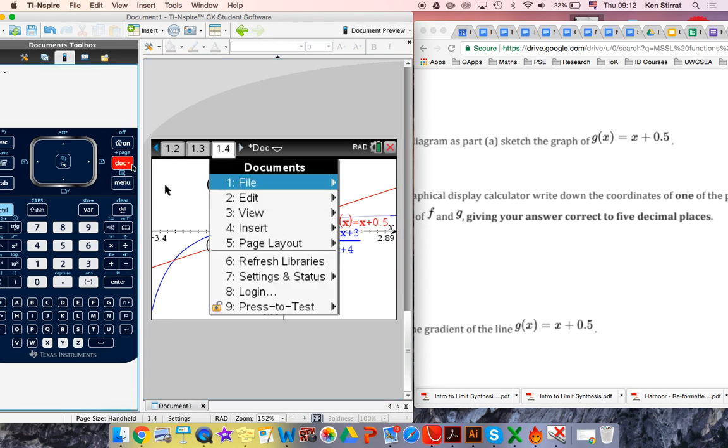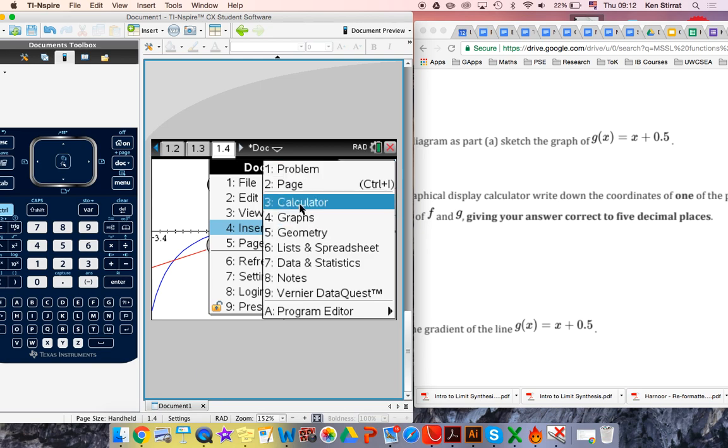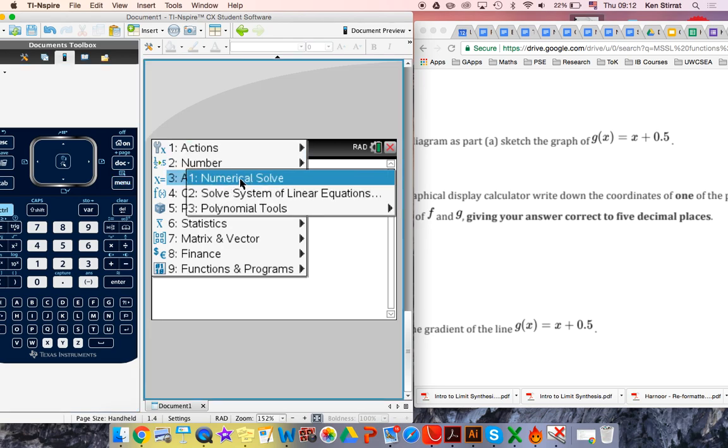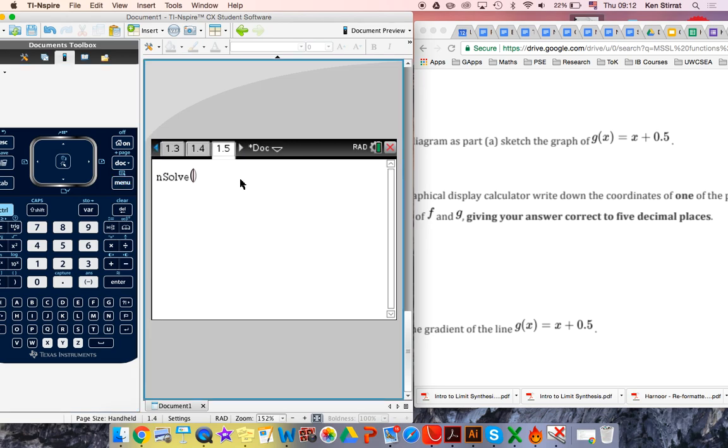So we can go document, insert, calculator page, and we can use our wonderful menu, algebra, numerical solve. So we want to solve, ooh, this might work. I've not tried this before. We want to solve F1 of x. Ooh, this is cool, this is going to work. Is equal to F2 of x. We want to solve, comma, for x. Let's see if it works. Okay, great. We found the x-coordinate here. 0.350781. So that's one of the coordinates. So that's pretty cool. But how do we find the other one?